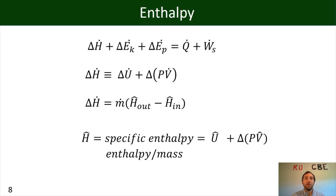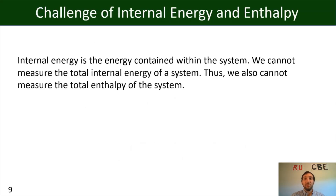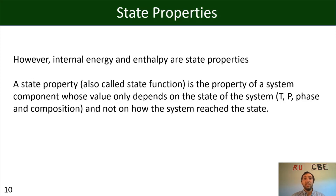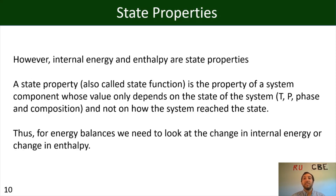As mentioned earlier, there is a challenge with working with internal energy and enthalpy: internal energy is the energy contained within the system and we cannot measure it in absolute terms. Therefore, we also cannot measure the total enthalpy of a system. However, we can define one state as a reference state set to zero and then look at changes in our states. We can do this because internal energy and enthalpy are state properties. A state function is a property of a system whose value only depends on the state of the system — temperature, pressure, phase, and composition — regardless of how the system reached that state. Therefore, for our energy balances, we look at the change in internal energy or the change in enthalpy.